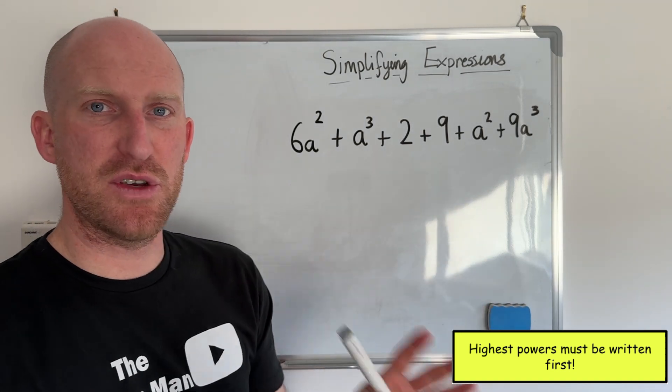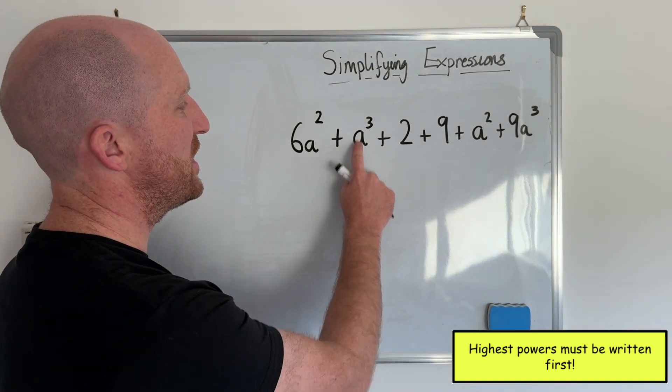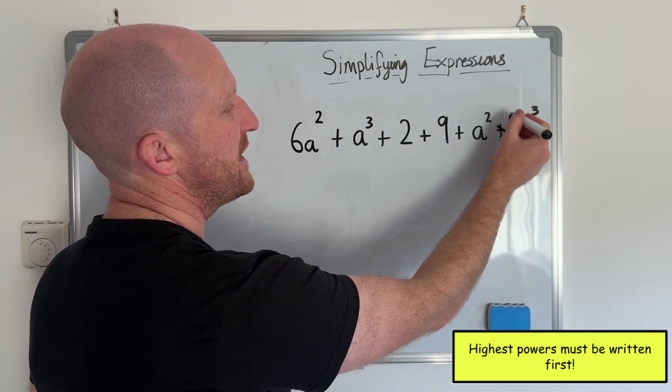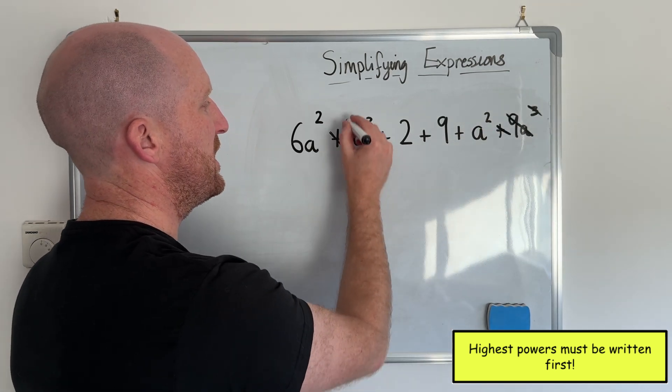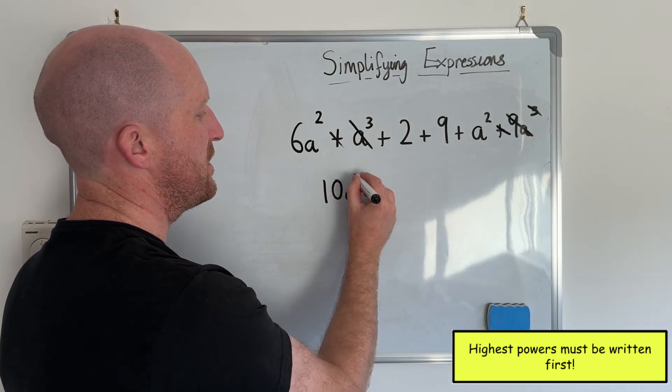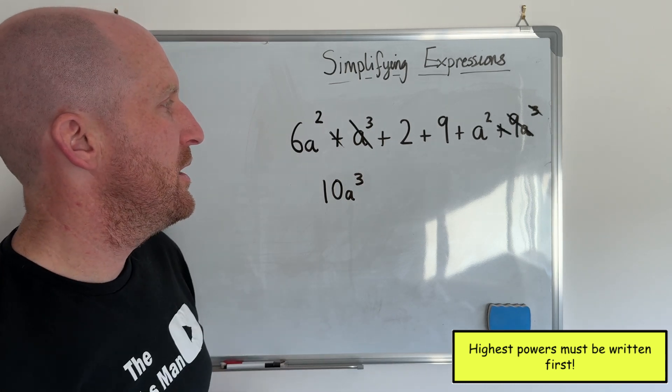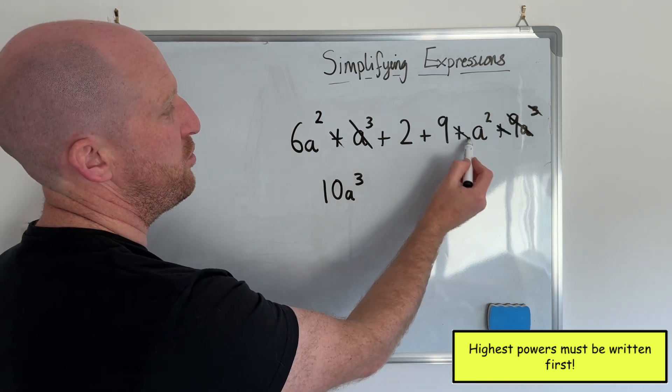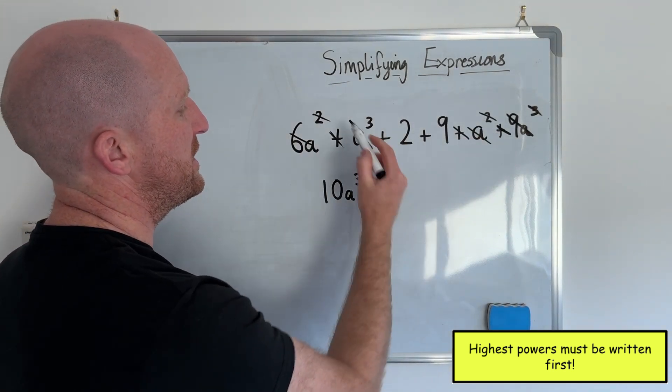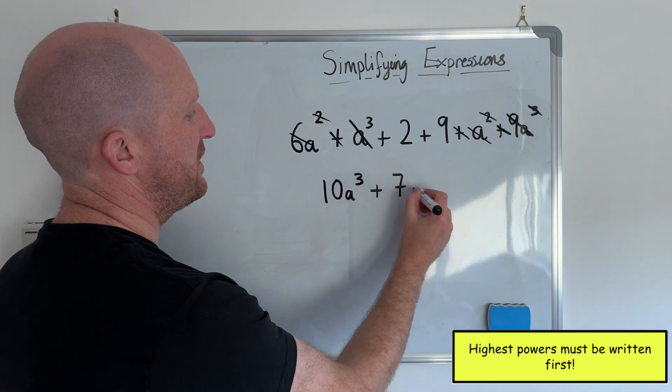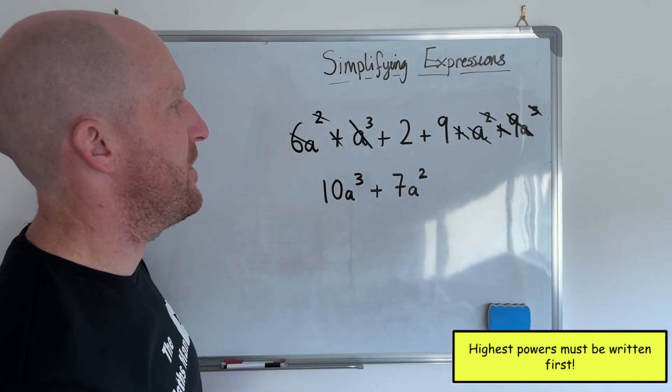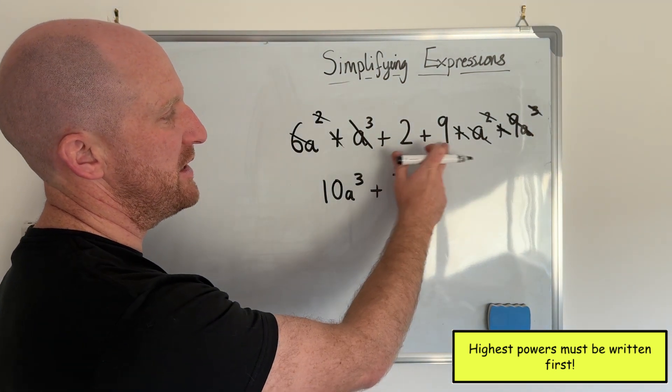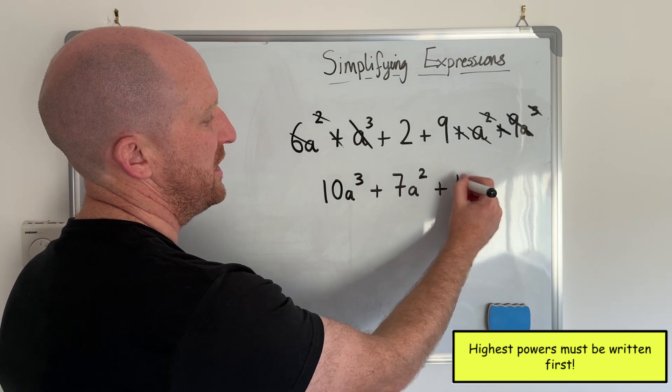So I'm going to start with the cube numbers first because they're the highest power. So I've got plus a cubed and then I've got plus 9a cubed. So that gives me 10a cubed. Now I'm going to deal with the squared numbers. So I've got 6a squared and I've got plus a squared. So that gives me plus 7a squared. And then I've just got my two regular numbers. So I've got plus 2 add 9, which is plus 11.